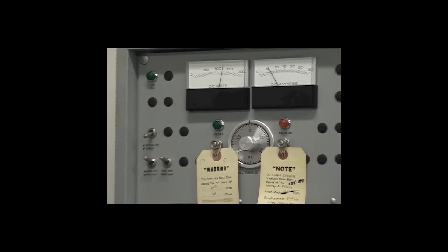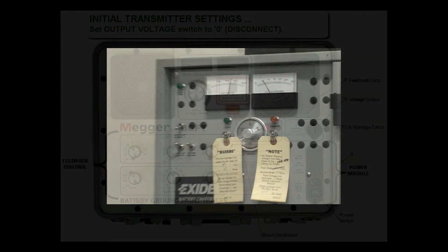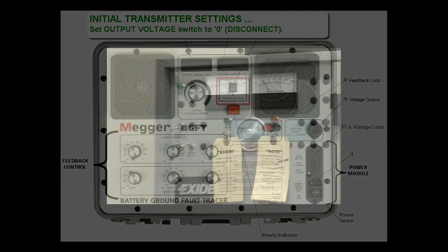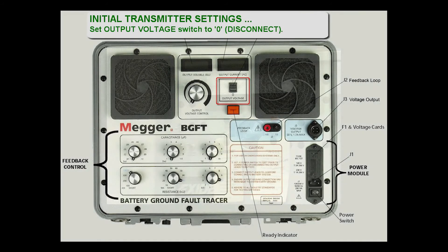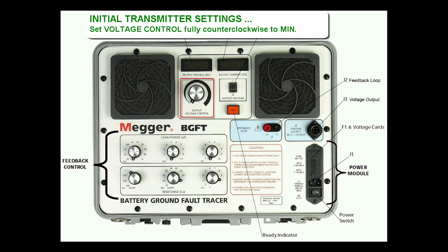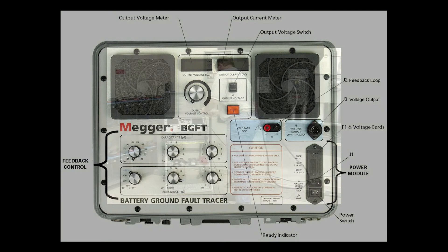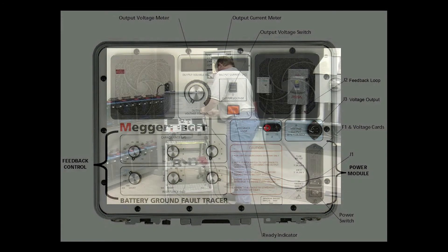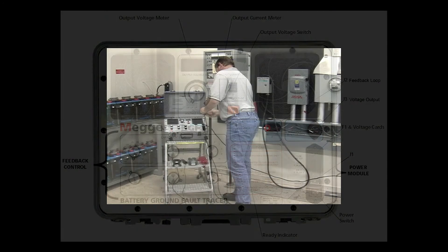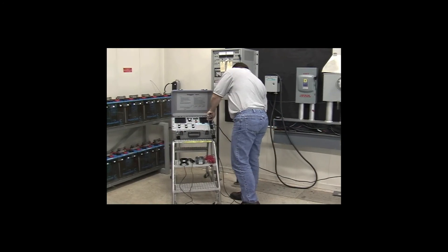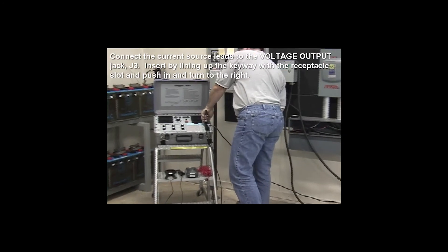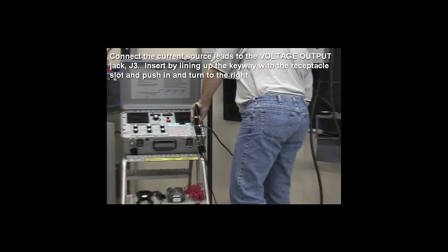Other facilities come under the guidelines of the National Electric Code, NFPA, IEEE standards, and OSHA requirements for safe operation of DC battery systems in an ungrounded environment.